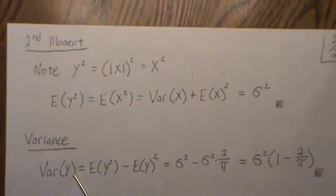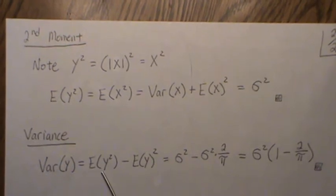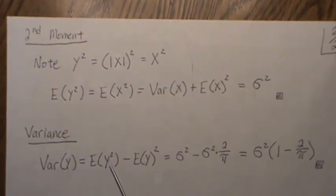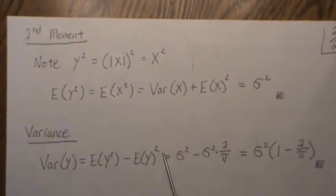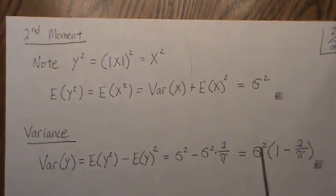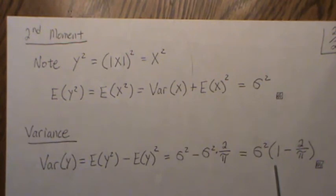So then the variance of y is equal to the expected value of y squared minus the mean squared. And this was sigma squared. And this we derived on the first page. So sigma squared can be factored out leaving this. And that's the variance of half normal distribution.